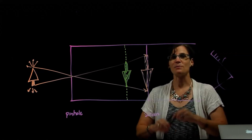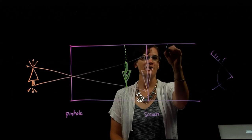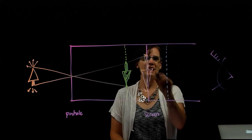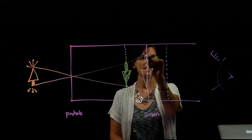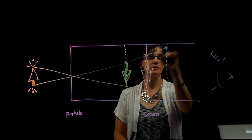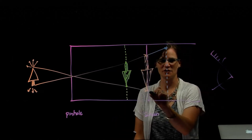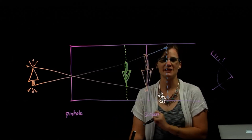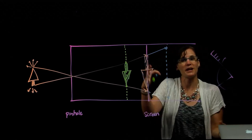Similarly, if I move the screen further back, our light rays have more time to spread out. The bottom of the tree hits at that location on the screen. The top of the tree hits at that location on the screen. The light rays have spread out even more.